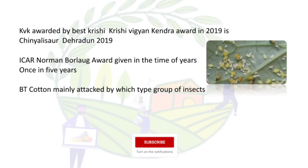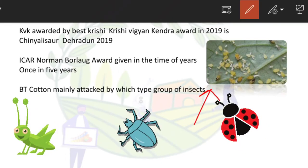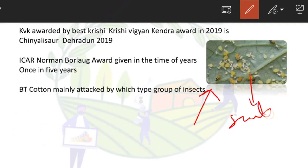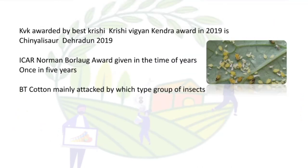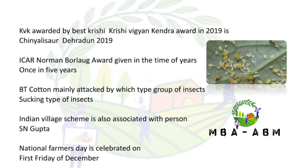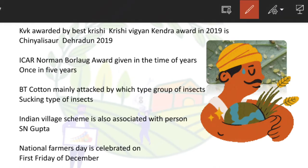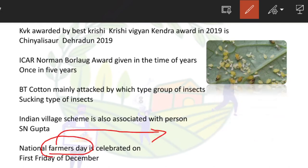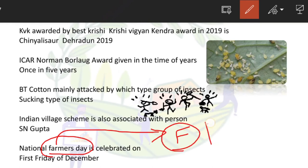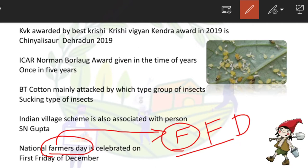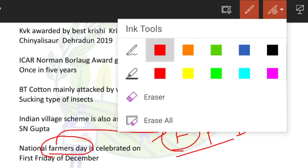BT cotton is mainly attacked by sucking type of insects. The Indian Village Scheme is associated with S.N. Gupta. National Farmers Day is celebrated on the first Friday of December — remember it as 'FFD': First Friday of December.